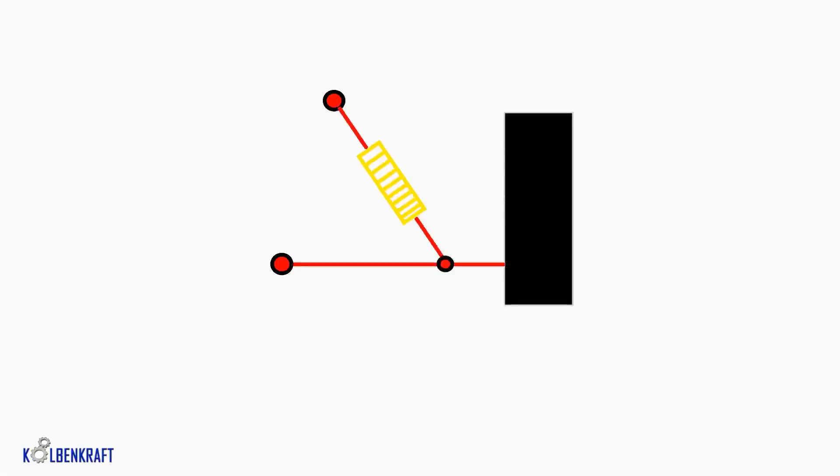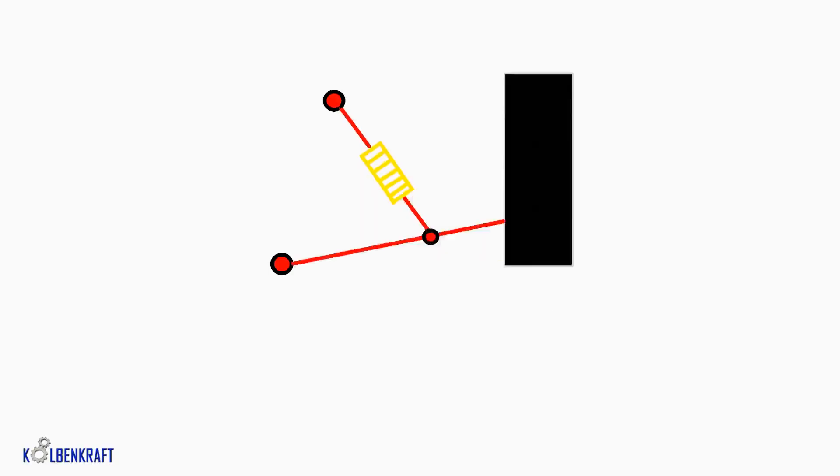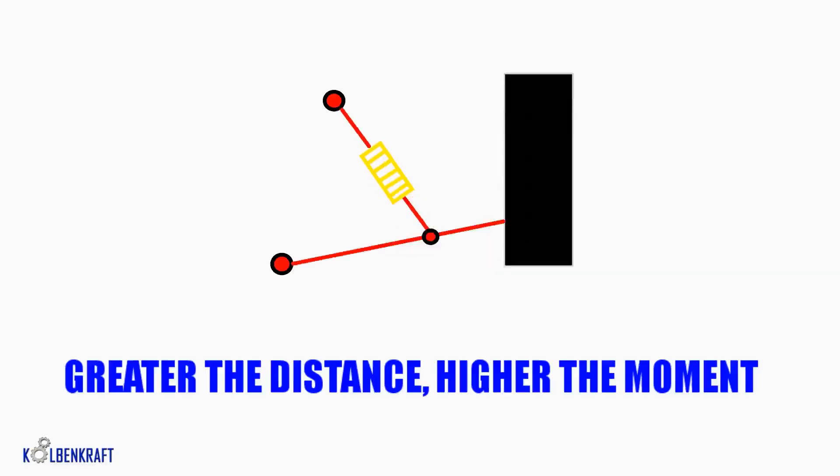So coming back to this video, in order to understand the difference between the spring rate at the wheels and the suspension system, we need to think about the moment - moment which we all learned in high school physics. The greater the distance, the higher will be the moment.